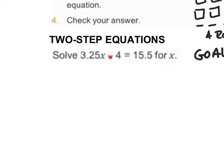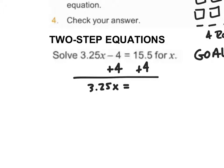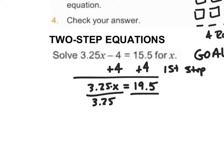The first thing I'd want to do is move over this minus 4. The opposite of subtracting 4 would be adding 4 to both sides. I get 3.25x is equal to 15.5 plus 4, which gives me 19.5. That's my first step. Now I do a second step: 3.25x equals 19.5. Because I'm multiplying 3.25 by x, I divide both sides by 3.25. That gives me x is equal to 19.5 divided by 3.25, which is 6.